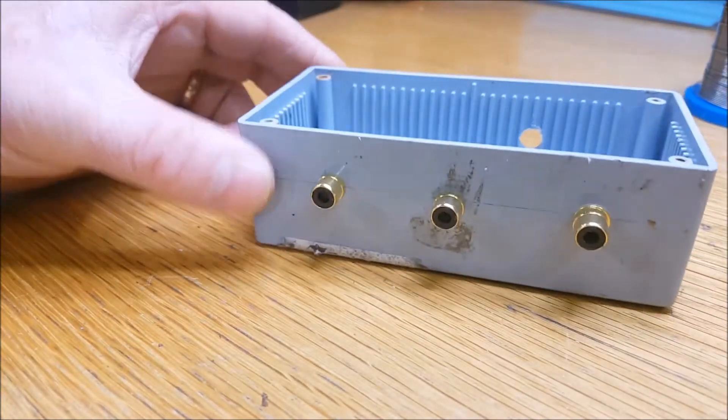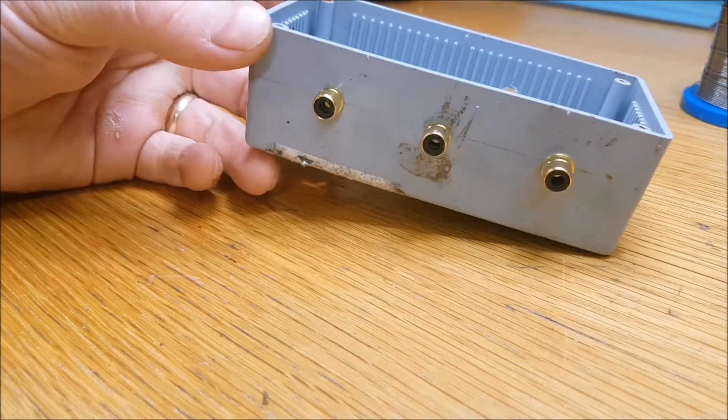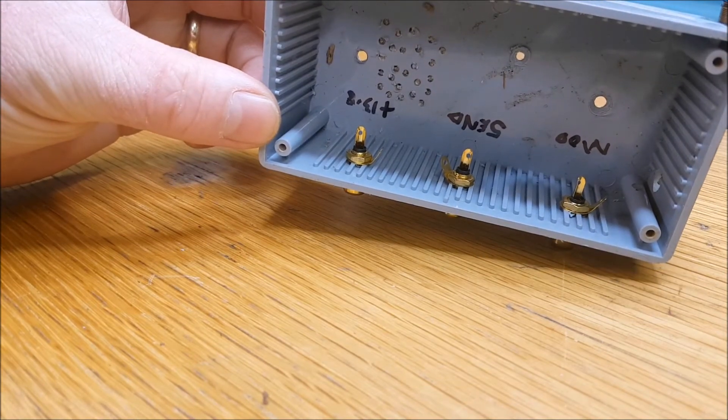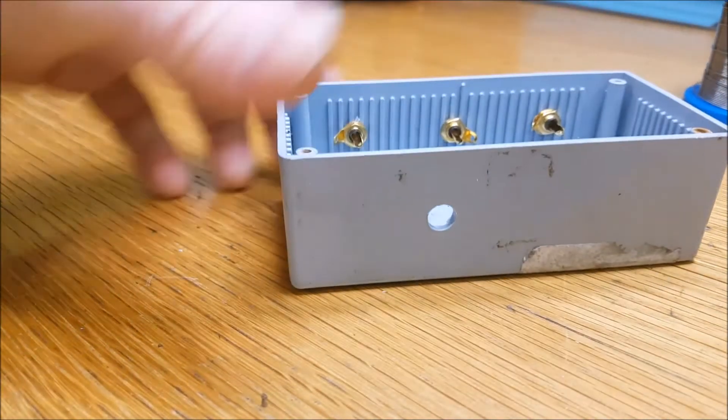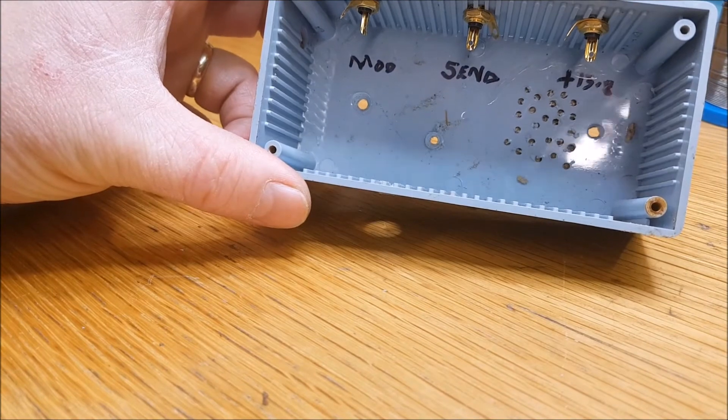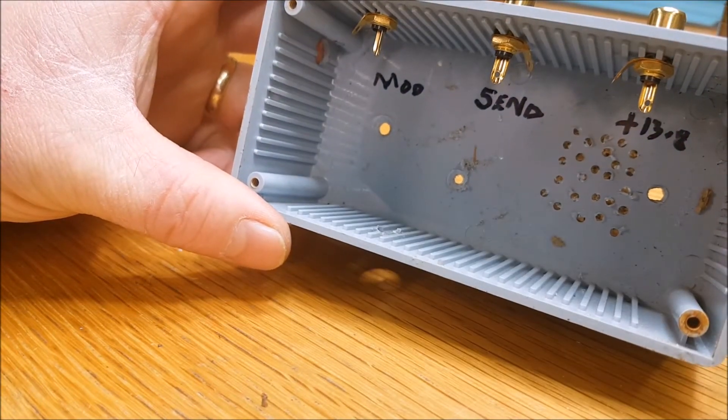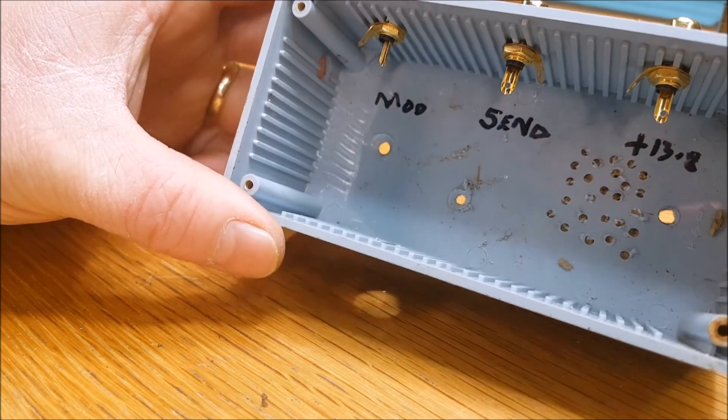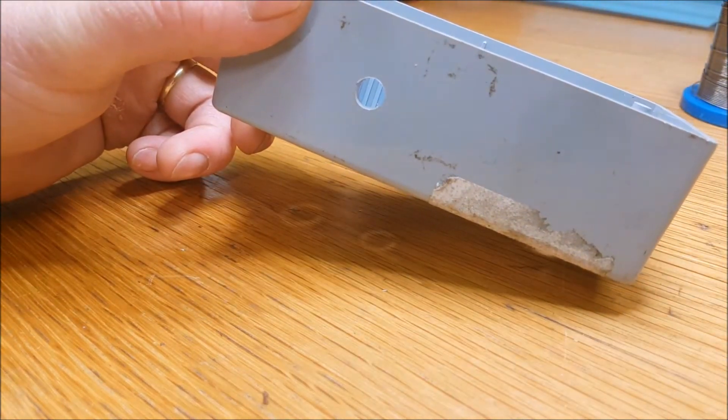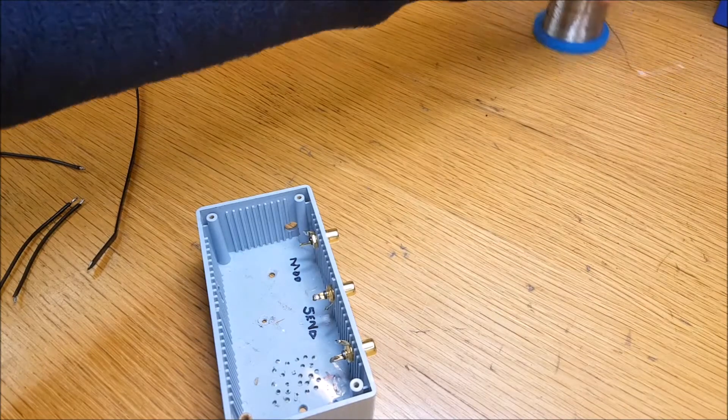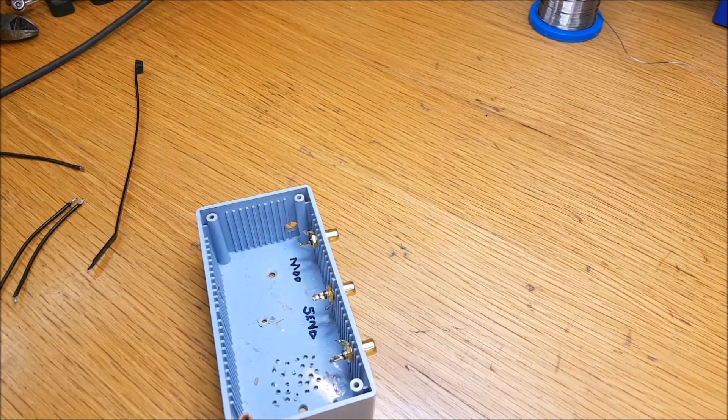What I've done now is I've drilled the box and I put three of the female RCAs on it. You can see there I have it done, just labeled inside: mods and 13.8. You can add more of these if you want if you want to do any of the other pin connections, it's up to yourself. There's a hole drilled in the back for the cable to go in. So let's get our cable into the box.